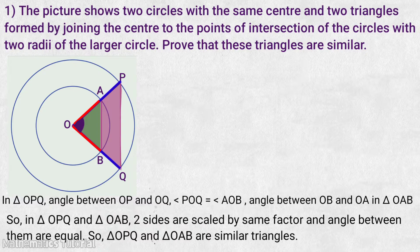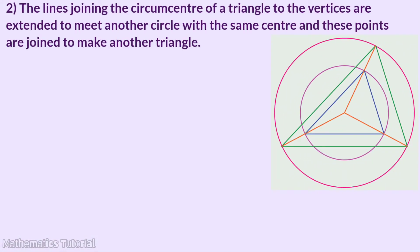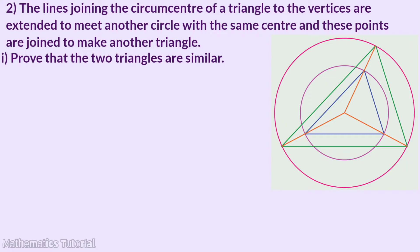So the lines joining the circumcenter of a triangle to the vertices are extended to meet another circle with the same center, and these points are joined to make another triangle. First question: prove that the two triangles are similar.